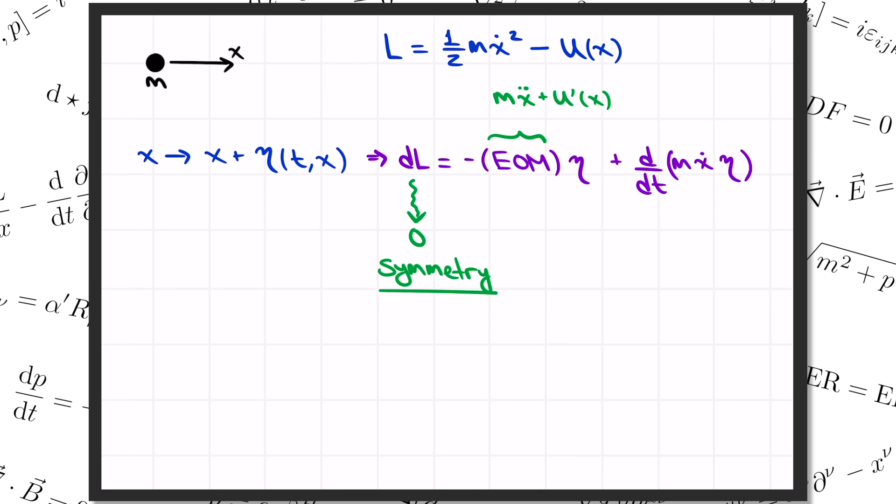But if x of t does satisfy the equation of motion, then the first term on the right-hand side here is 0. Therefore, for a symmetry transformation of the trajectory that satisfies the equation of motion, we learn that this last term is also going to be equal to 0. And therefore, this quantity, m x dot times eta, is a constant, independent of time. This is Noether's theorem. For every infinitesimal symmetry of the Lagrangian, we obtain a conserved quantity, dq by dt equals 0. And here in our one-dimensional example, q was just m x dot times eta.